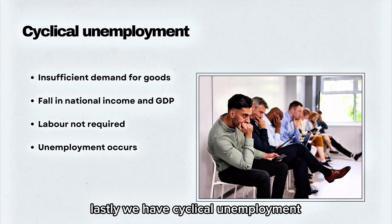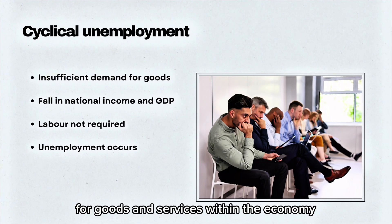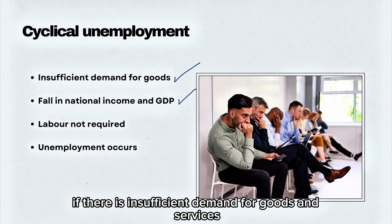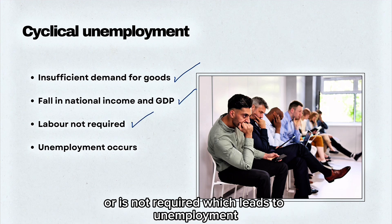Lastly, we have cyclical unemployment. This is when there is insufficient demand for goods and services within the economy, which leads to a fall in national income and GDP. If there is insufficient demand for goods and services, the demand for labour will decrease, which leads to unemployment.